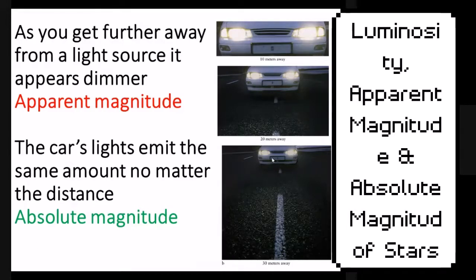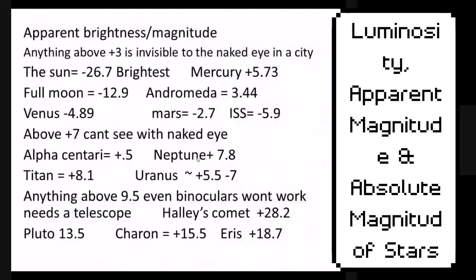Here are some examples of apparent magnitude objects in our solar system. The brightest thing in the sky with apparent magnitude is going to be the sun — it's really close compared to the stars, and it's a star. Mercury is not very bright; it's too far away from us compared to something like Venus, which is negative 4.89 — much, much brighter than Mercury. Mercury's number can change because it goes around the sun and is sometimes closer, sometimes farther away.